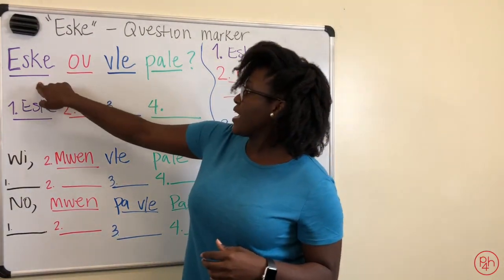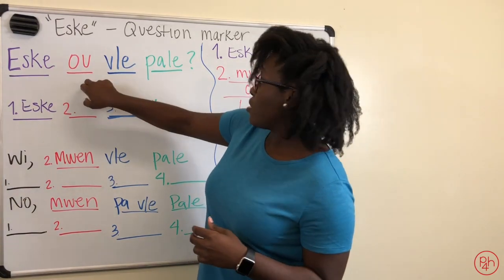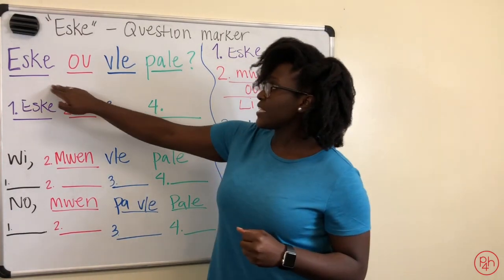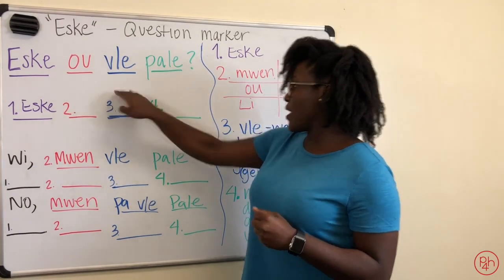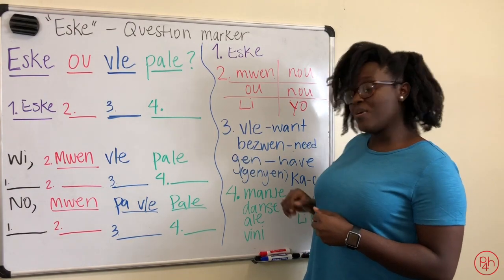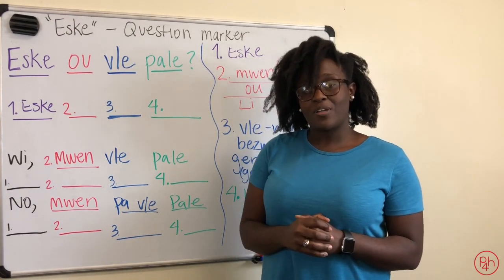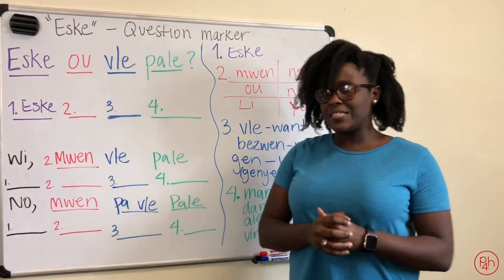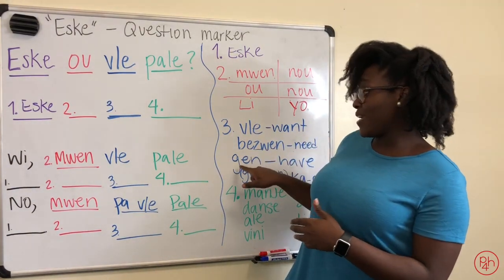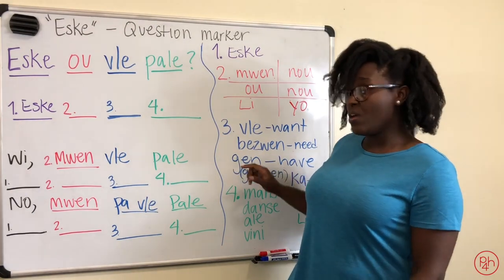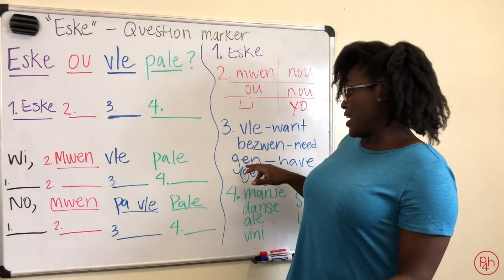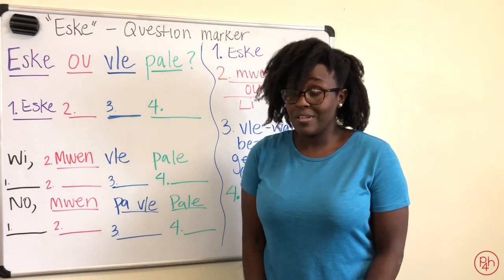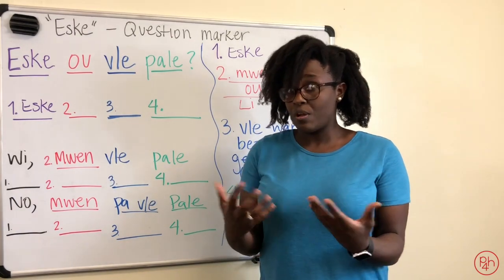So I could say est-ce que yo besoin manger? Do they need to eat? Manger means to eat. Also, guen — or the longer version, guen — means to have. Est-ce que yo besoin manger? Do they have food? Because manger means to eat or also means food.